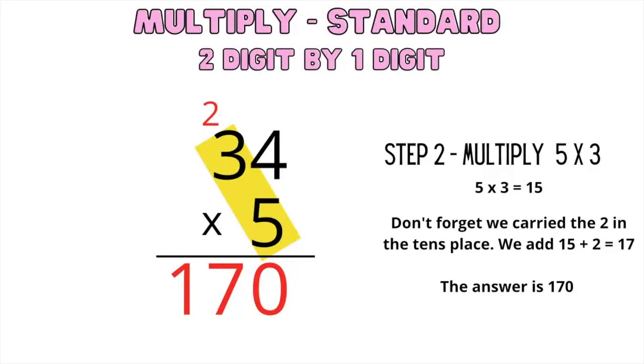Step 2, we multiply the 5 and the 3. 5 times 3 is 15. But don't forget, we carried the 2 in the tens place. So we have to add 15 plus 2 equals 17. We then bring down the 1 and the 7, and we have our 0. So the answer is 170.